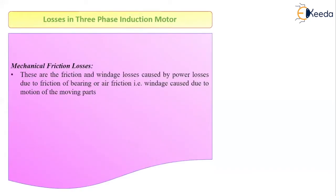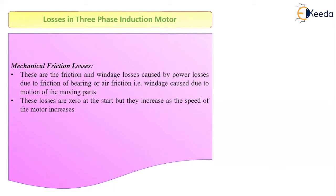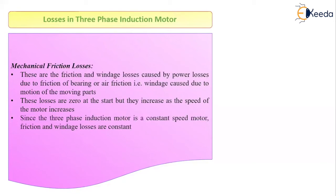Next are the mechanical friction losses. Since the induction motor is a rotating machine, whenever the rotor is rotating there are certain mechanical losses associated with its rotation. These are the friction and windage losses, caused by friction of the bearings, air friction (windage loss), and moving parts of the motor. These losses are zero at start because at the moment of starting, the rotor is not rotating. But as the speed of the motor increases and the rotor starts rotating, the losses increase.